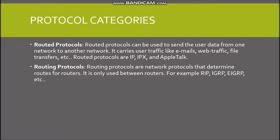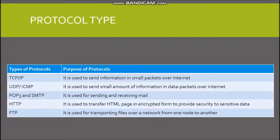Routing protocols are network protocols that determine routes for your routers. They are only used between routers. Examples include RIP, IGRP, and EIGRP. Moving on to types of protocol — the first is TCP/IP, whose purpose is to send information in small packets over the internet.